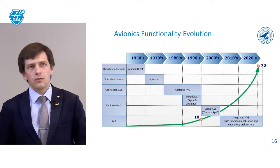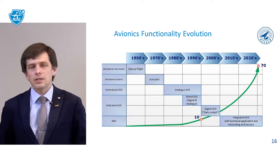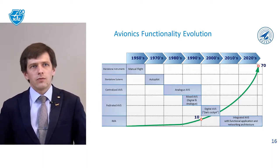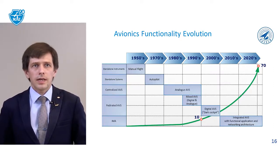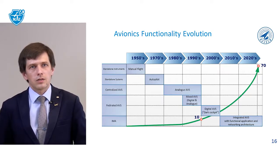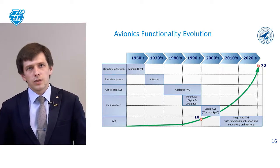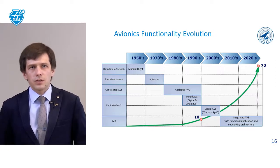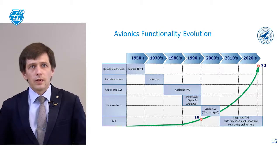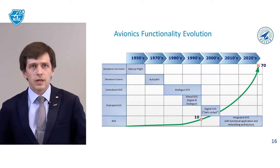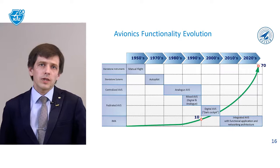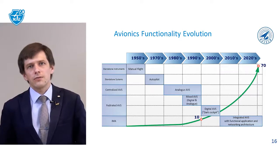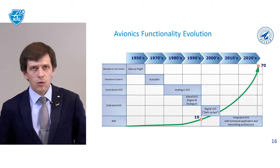Firstly, it was manual flight in the 1950s. In the 1970s, new functions such as autopilot began. In the 1980s and 1990s, analog electronics and analog avionics began, with mixed functions of digital and analog devices. In the 2000s, digital avionics with a dark cockpit began in new aircraft. Nowadays, we don't have separate devices – we have integrated functions in our avionics complexes.